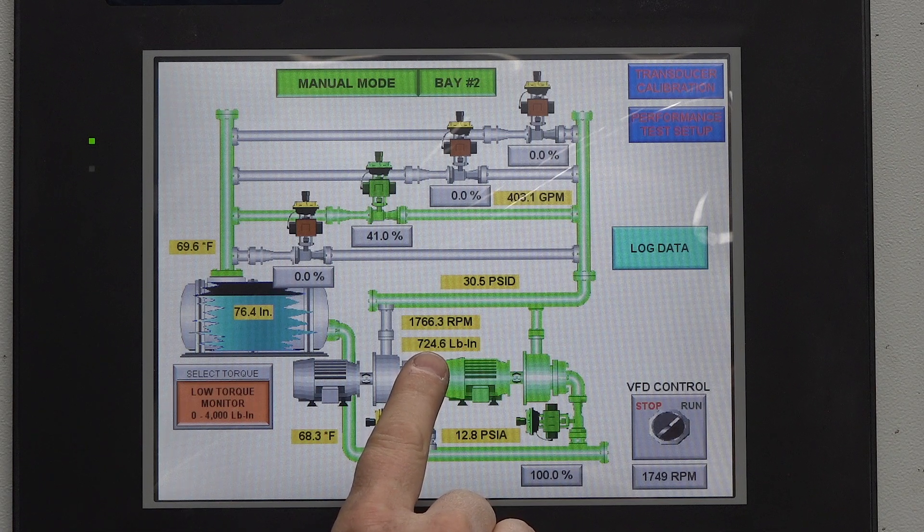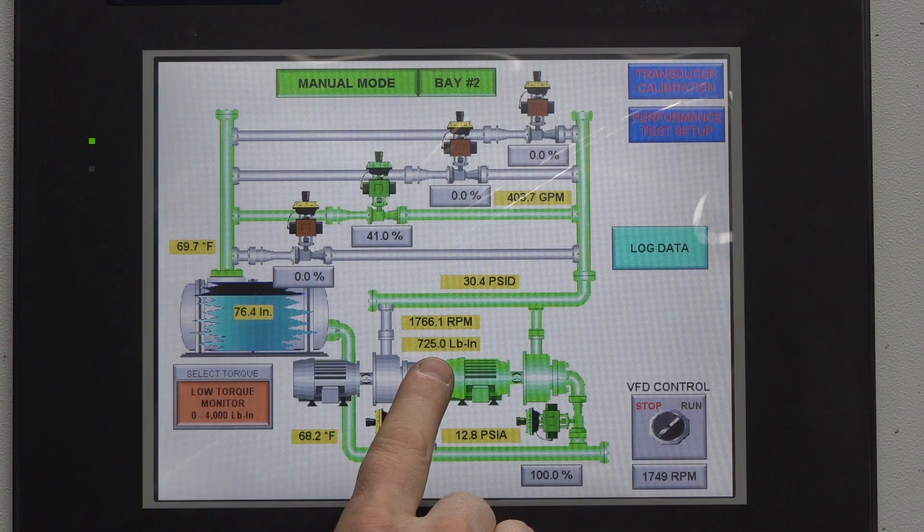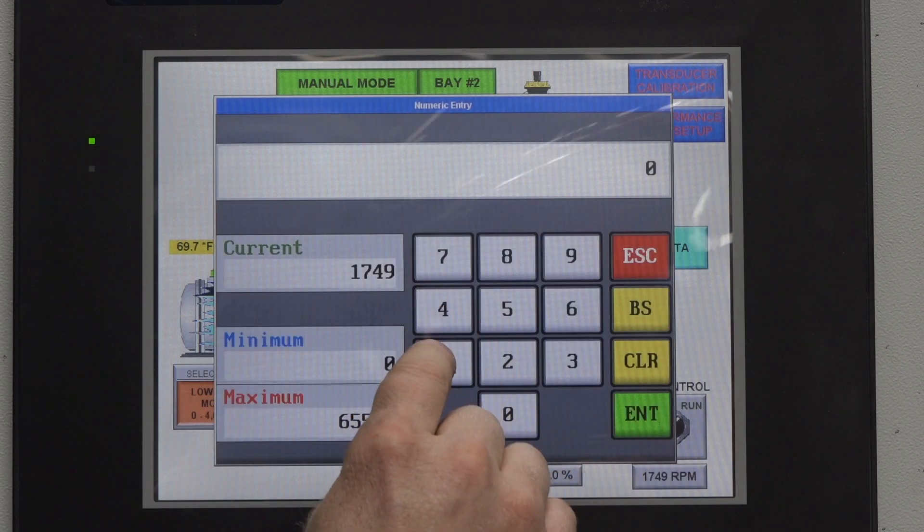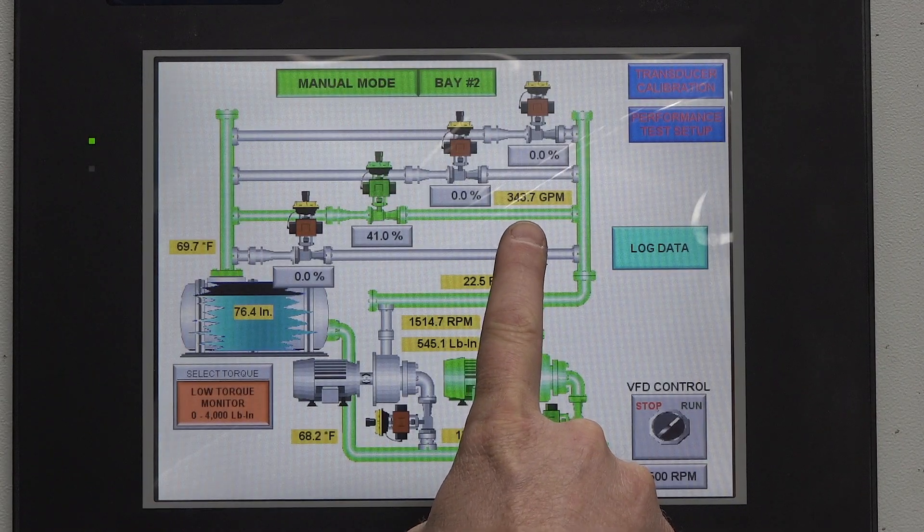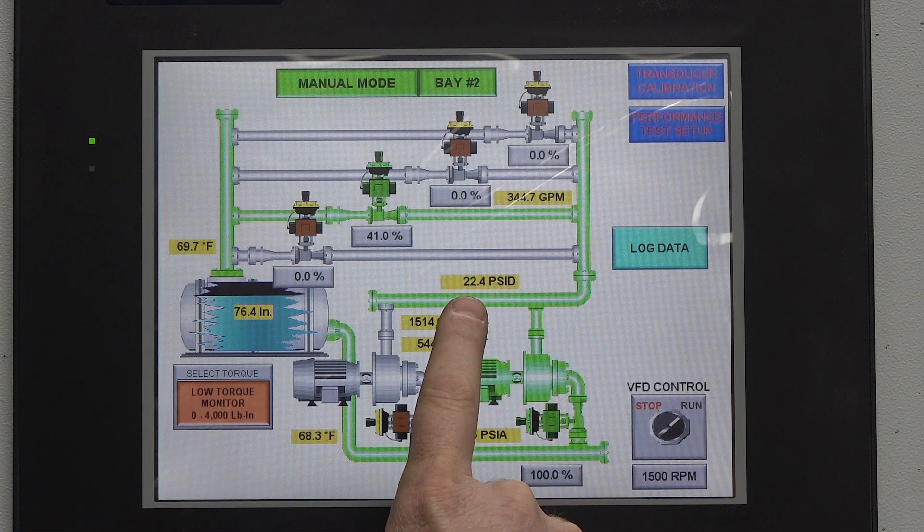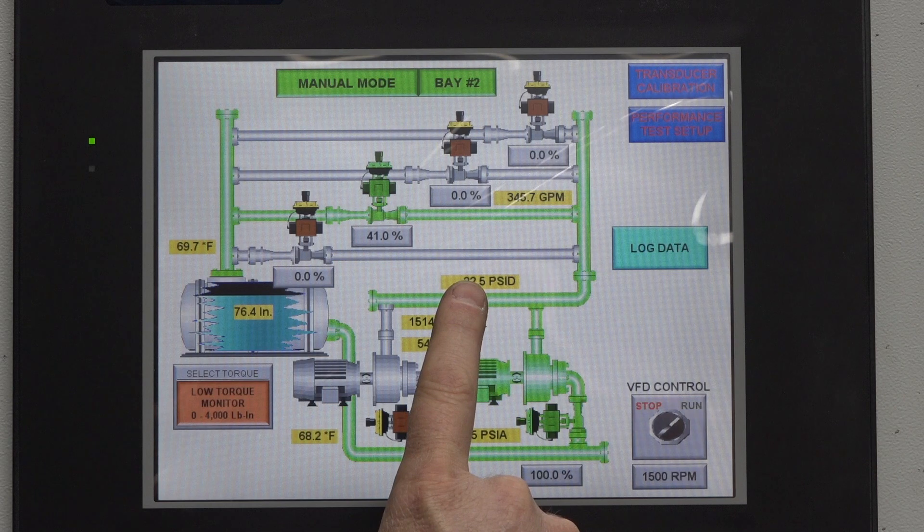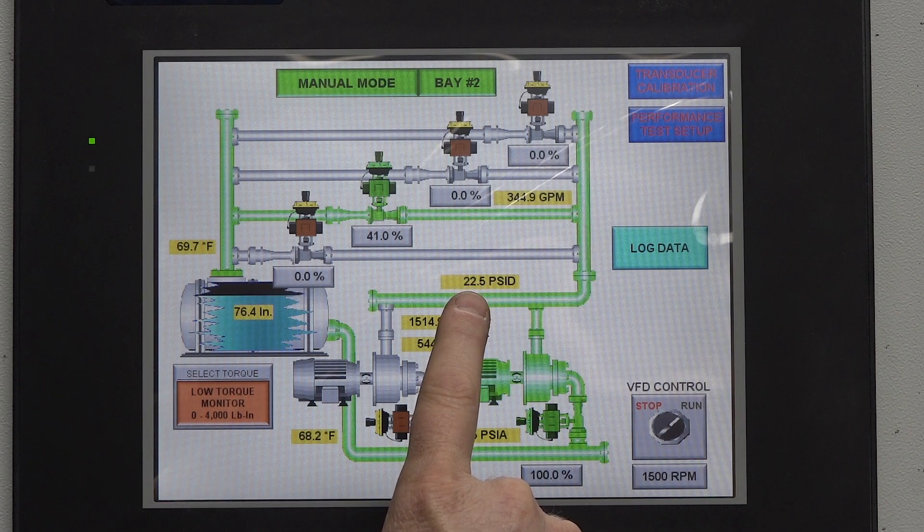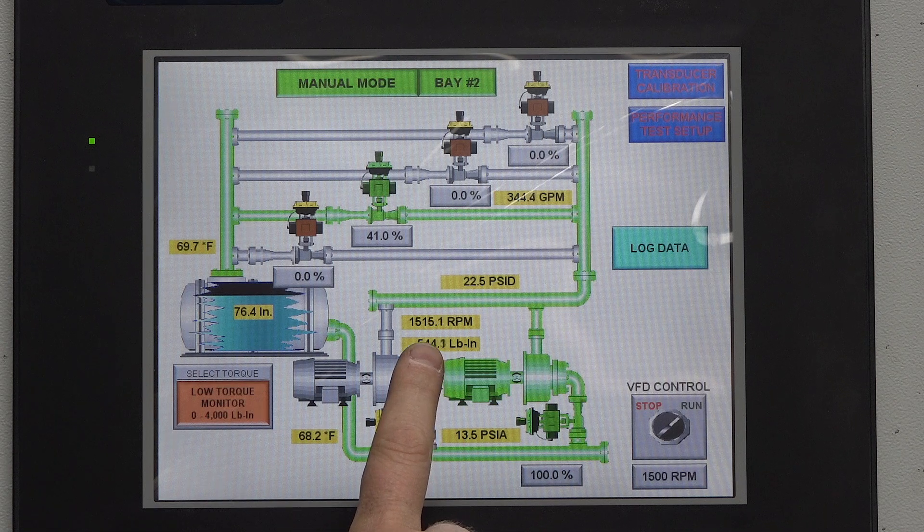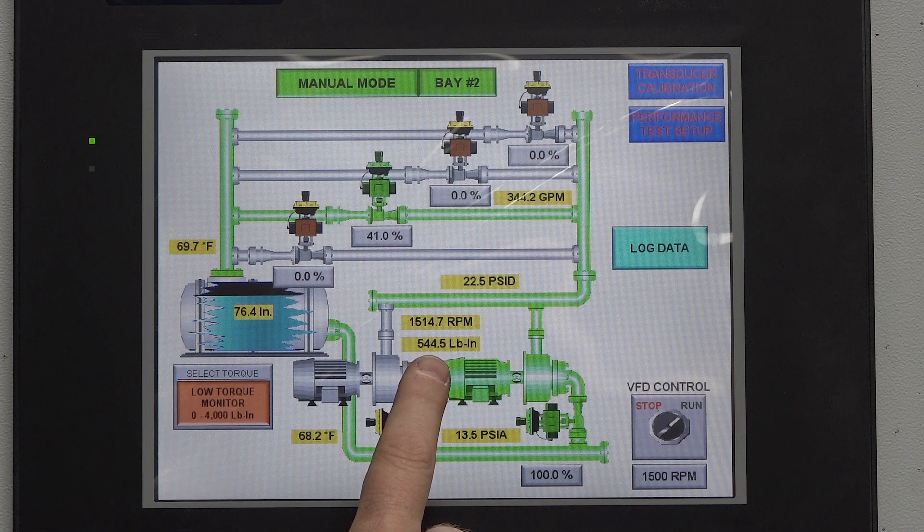We're now going to change the pump speed and we're going to drop it to 1500 rpm. Here the flow rate is now 343 gallons per minute. The differential pressure is 22.4 psi or 50.9 feet. And our horsepower is calculated at 13.1.